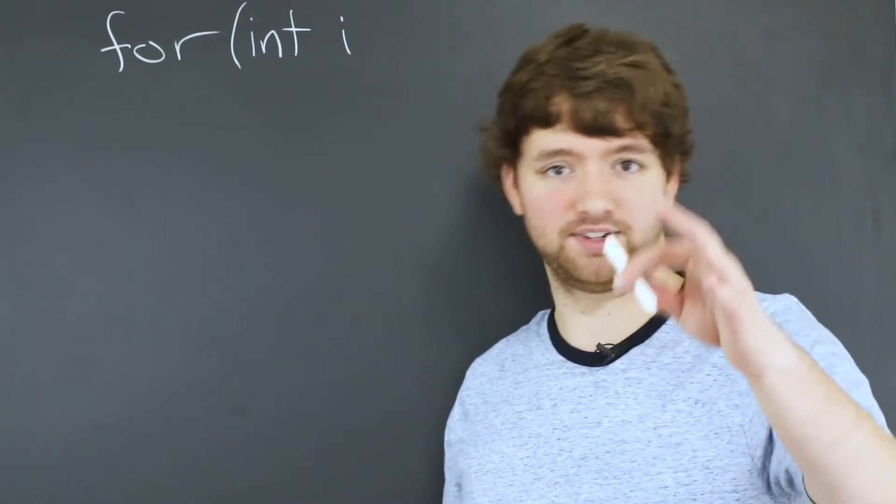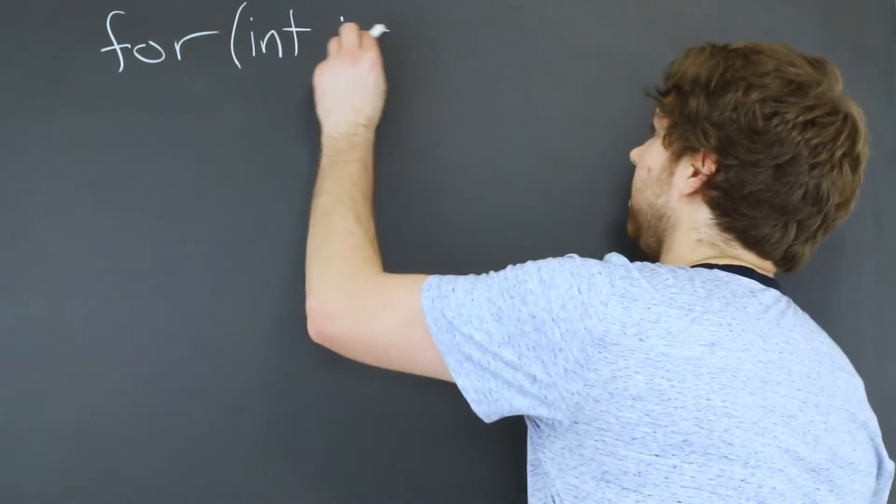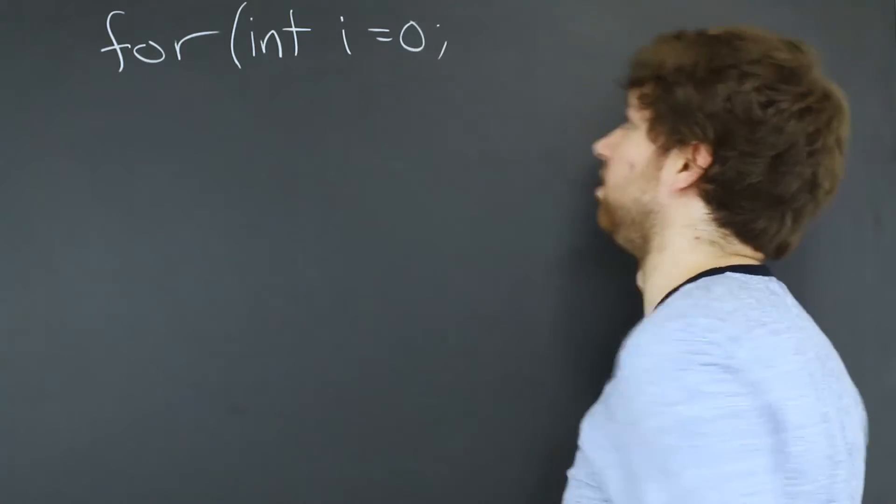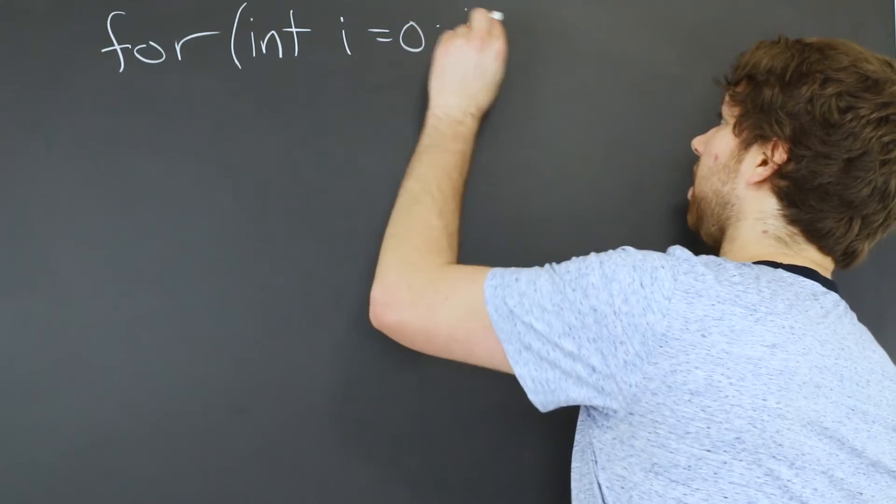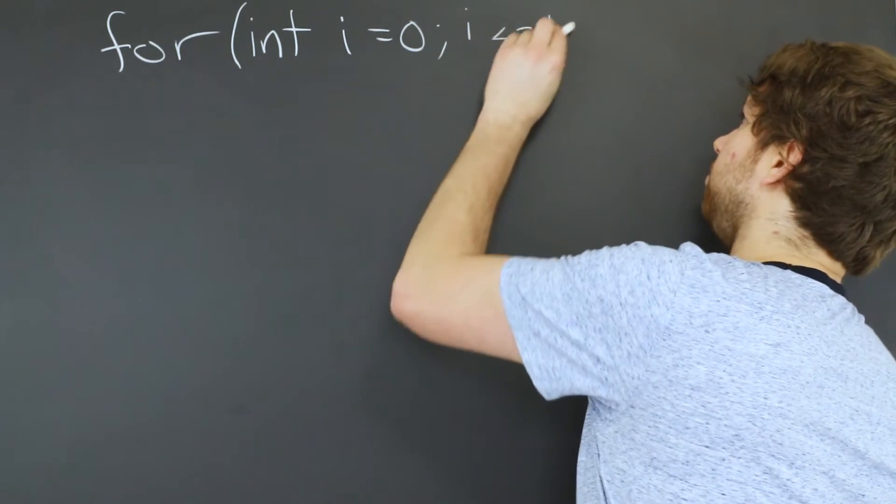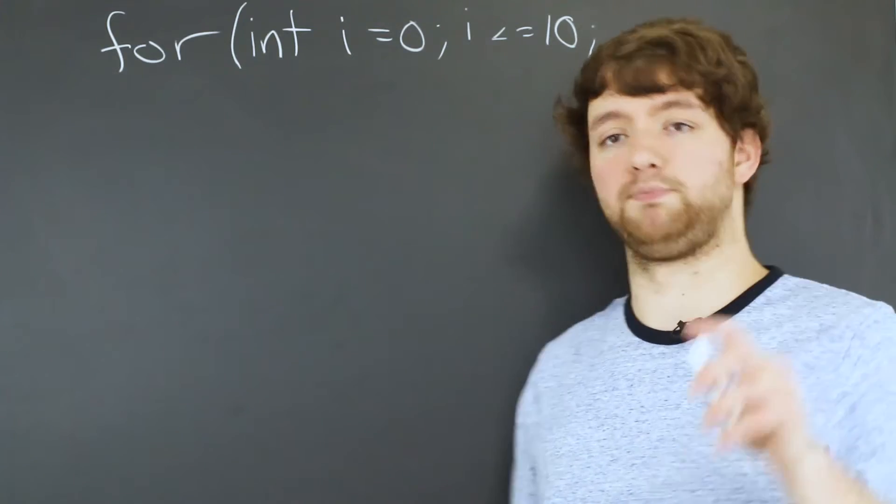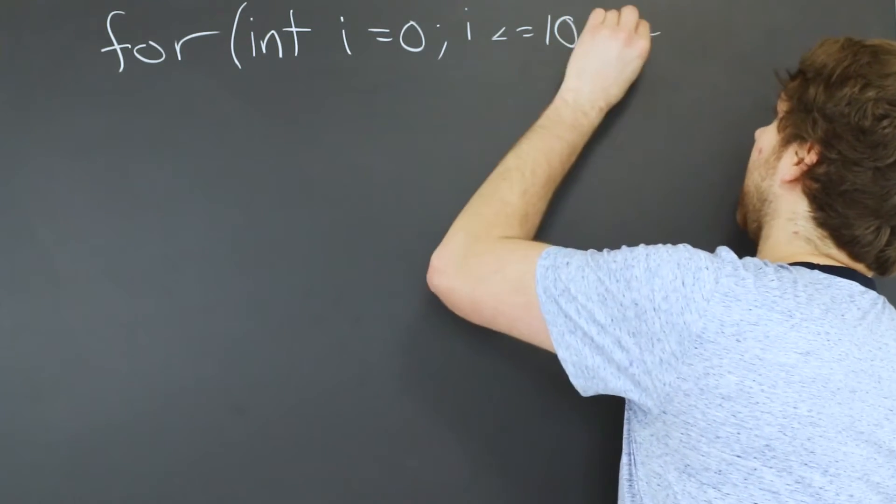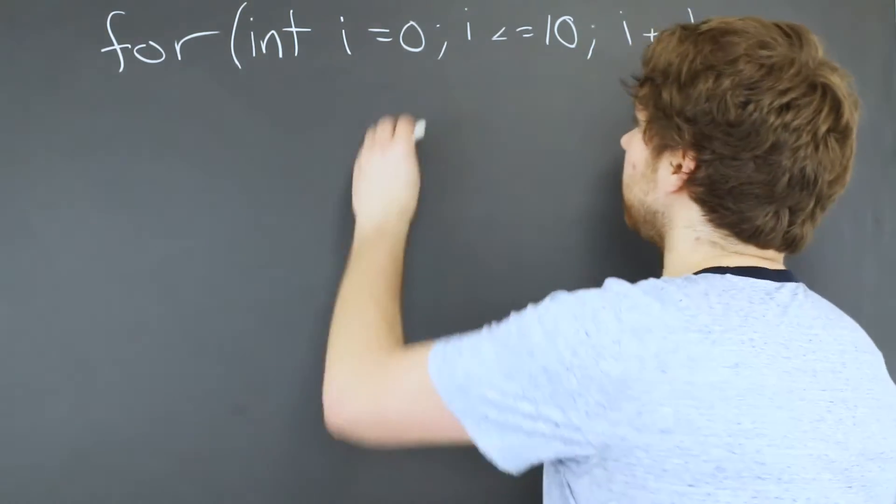First thing, initialization: int i equals zero, and we end it with a semicolon. Then we do the comparison while i is less than or equal to 10. And then we do the update, which is usually something like i plus plus. So you can visually see the three points: initialization, comparison, update.